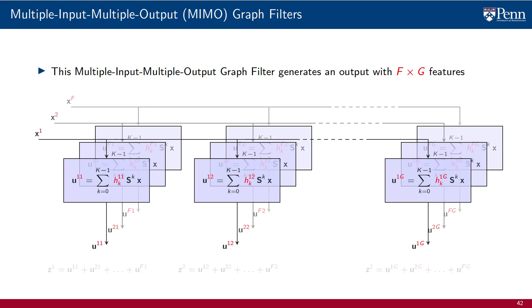We call this structure a multiple input, multiple output filter, because we have both multiple inputs and multiple outputs.